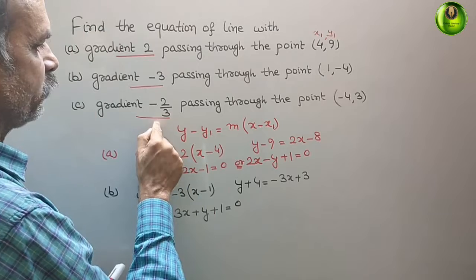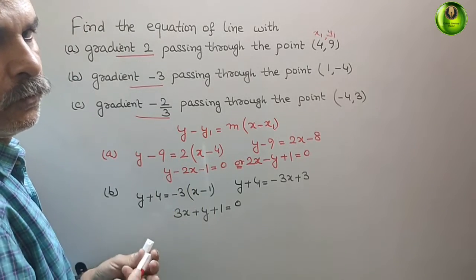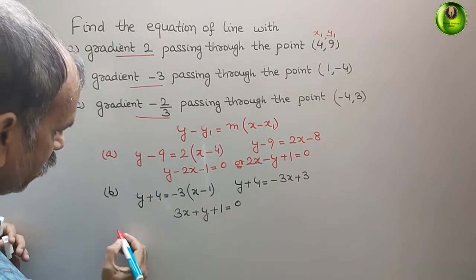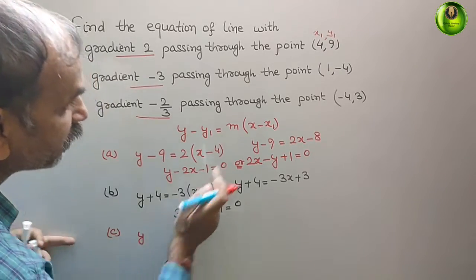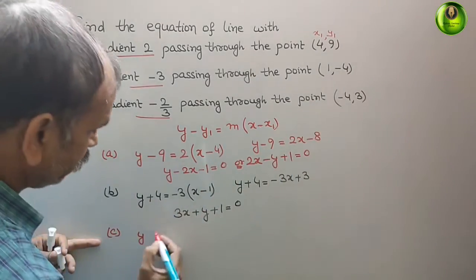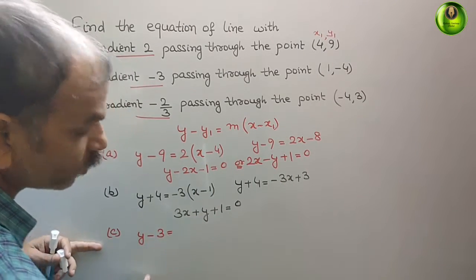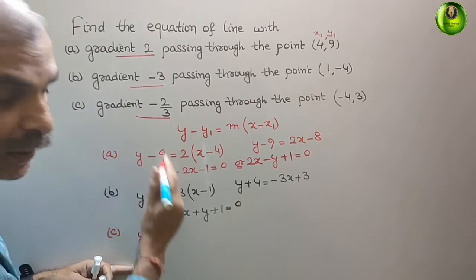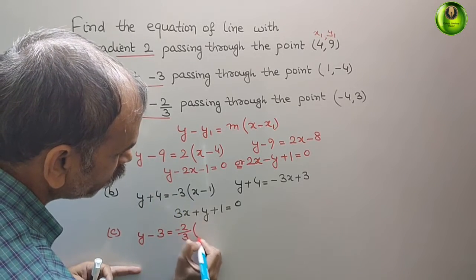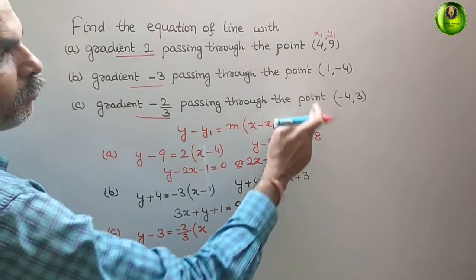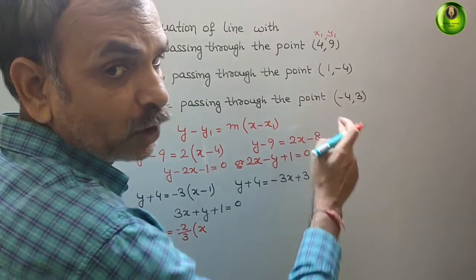Comes to your third equation. So here it will be what? See, y minus 3 is equal to gradient is minus 2 by 3 into x minus of minus 4 is plus 4.